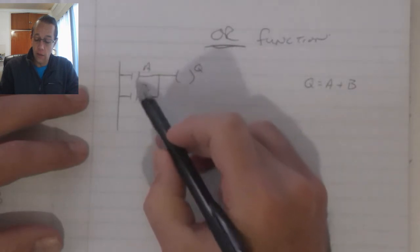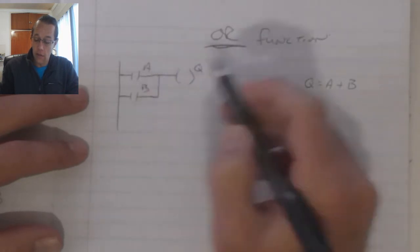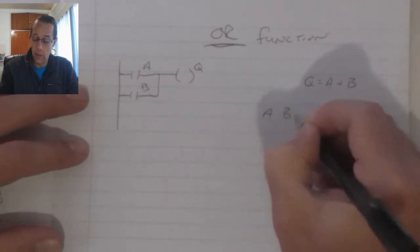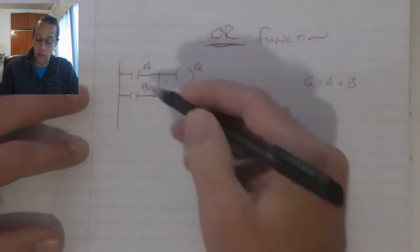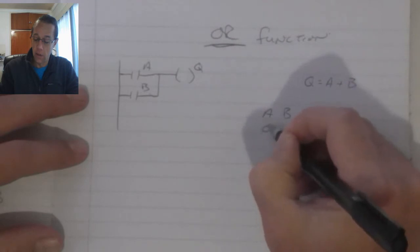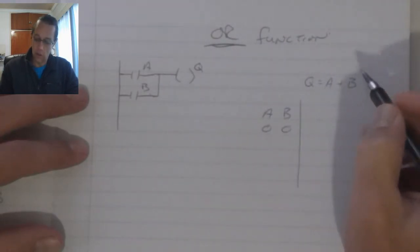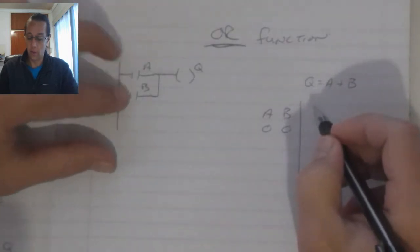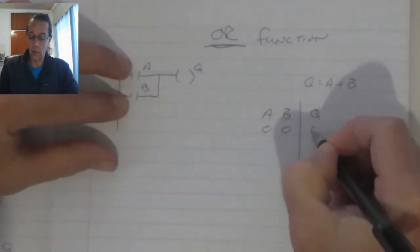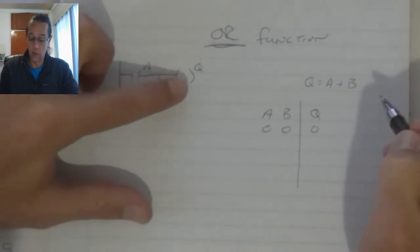If we consider the ladder diagram, we've got A and B as our inputs. We can add additional. If both A and B are zero, in other words they are both open, then the output will remain off.